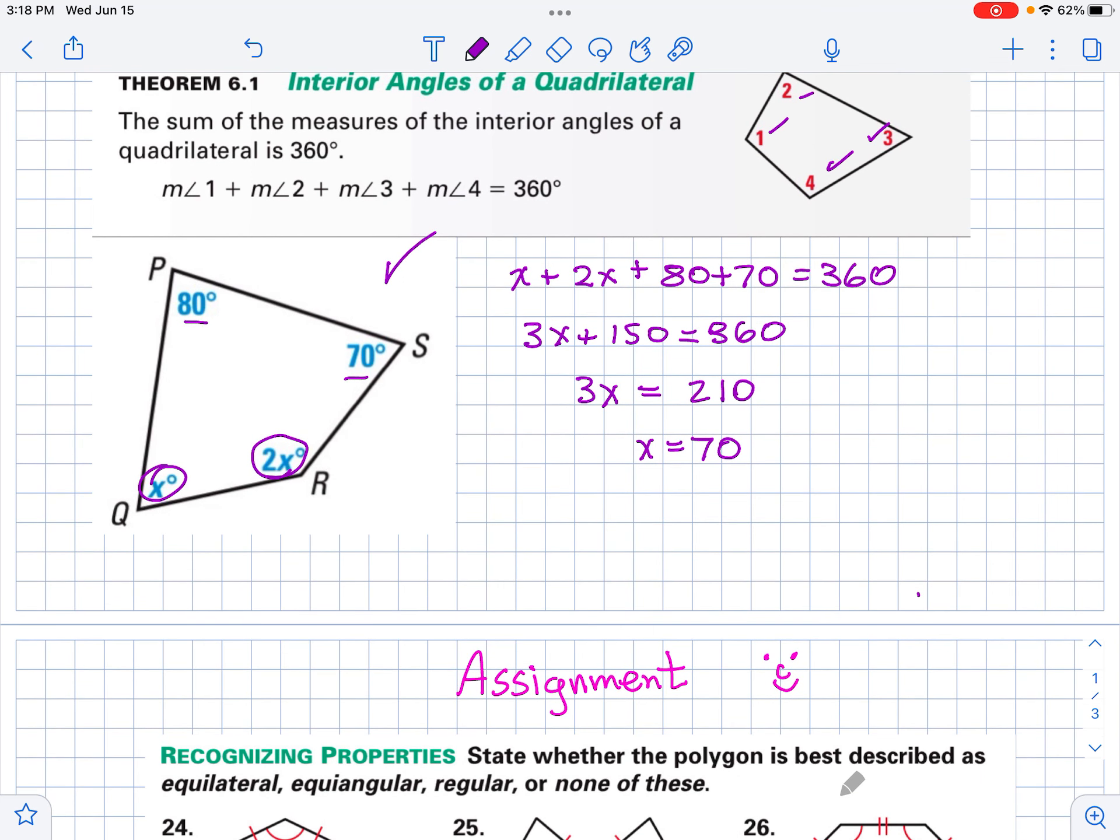So, look, x equals 70. That means this is 70 degrees here. And this is 140 degrees. So, let's see if that adds up. So, we have 80 and 70. That's 150. We have plus 140. Let's see what that is. That's 290. And then we add 70 onto that. 360. Hot dog. We got it.